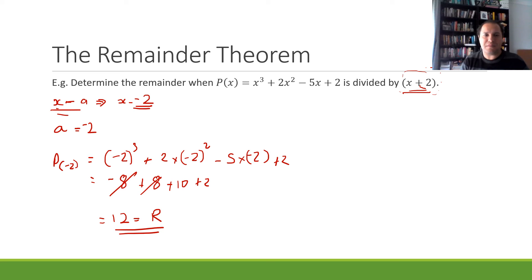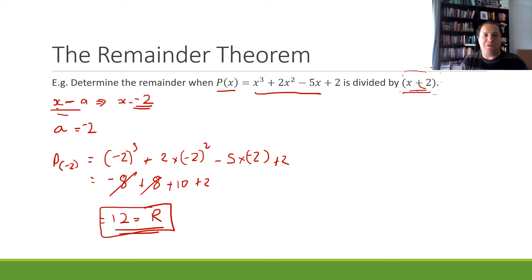According to the remainder theorem, that value is our remainder. So the remainder when p(x) is divided by x + 2 is always going to be 12 — that value of our polynomial when we substitute in negative 2.